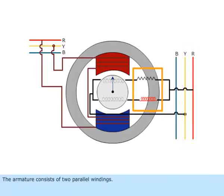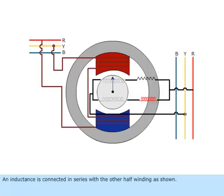The armature consists of two parallel windings. A resistance is connected in series with one half winding. An inductance is connected in series with the other half winding as shown.